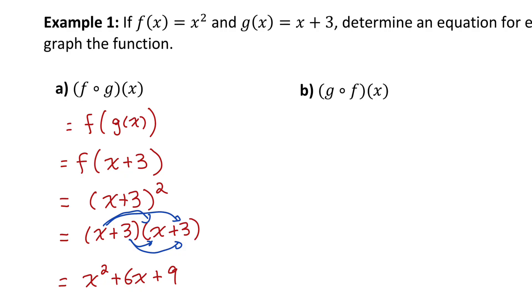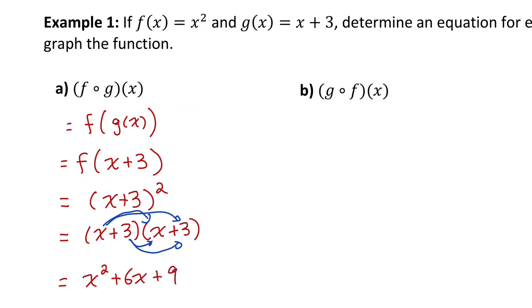When doing all four multiplications and collecting like terms, this is equal to x squared plus 6x plus 9. So the g of x function becomes the input for x in the f of x function — I take what g of x equals, which is x plus 3, and that becomes the input, so the f of x function becomes x plus 3 squared.